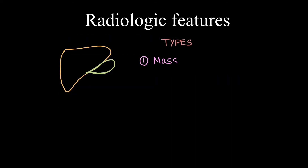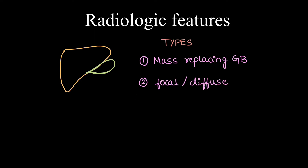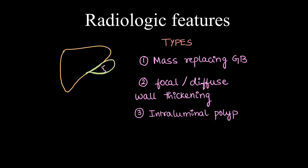Before moving on to cross-sectional imaging, we will see the types of gallbladder carcinoma. The first type is mass replacing the gallbladder — the entire gallbladder is replaced by mass, and this is the most common type of presentation. The second type is focal or diffuse wall thickening involving the gallbladder. The third type is an intraluminal polypoid mass within the gallbladder — any gallbladder polyp more than 1 cm in size is considered a risk for malignancy.